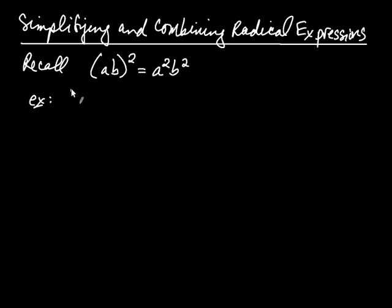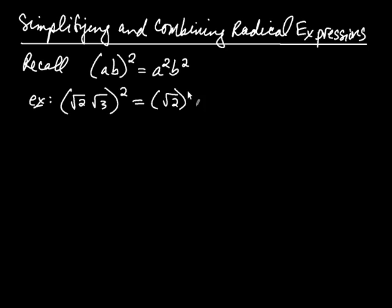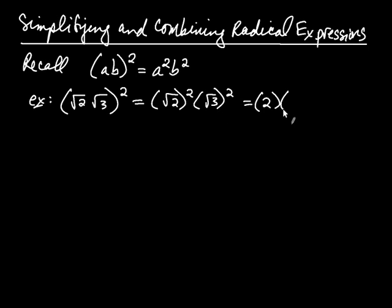Now, that applies in this situation. You could take the square root of 2 multiplied by the square root of 3, and you could square that. Now, a is root 2 and b is root 3, so I first get root 2 quantity squared, and then I get root 3 squared. Root 2 squared is just root 2 times root 2, which is equal to 2. And then square root of 3 squared is the square root of 3 times the square root of 3, which is 3. So 2 times 3 gives me 6.